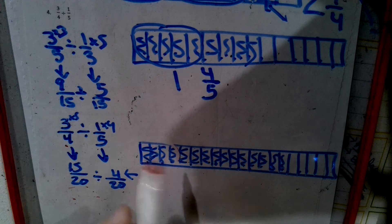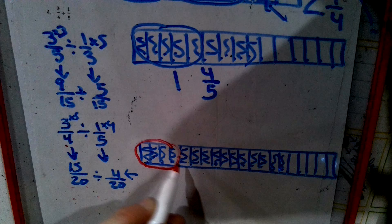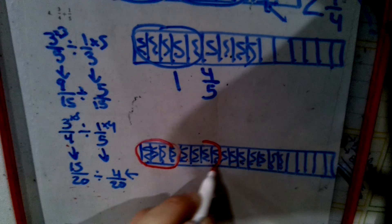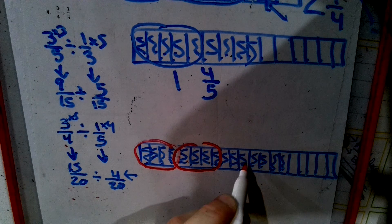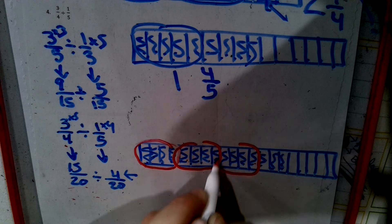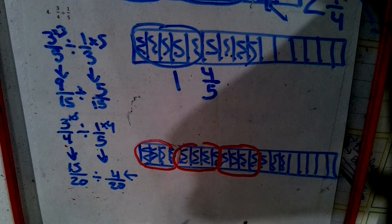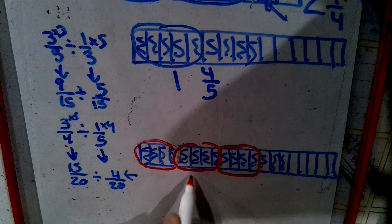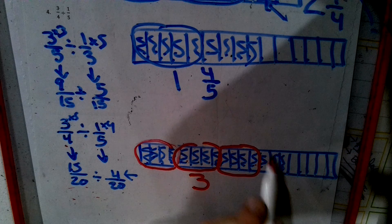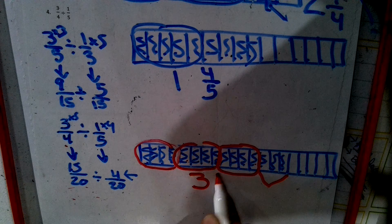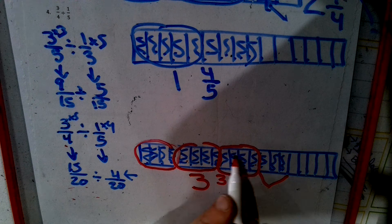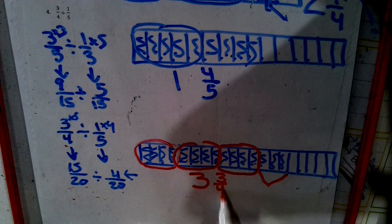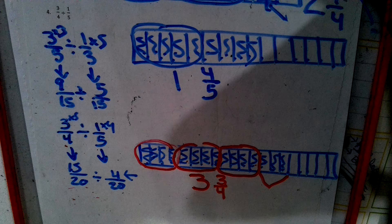I'm going to do this one in red for you. One, two, three, four, circle. One, two, three, four, circle. One, two, three, four, circle. One, two, three. Can't circle. How many groups did I circle? Three. How many are left over? Three. What's in a group? Four. That's my denominator. Three and three fourths.